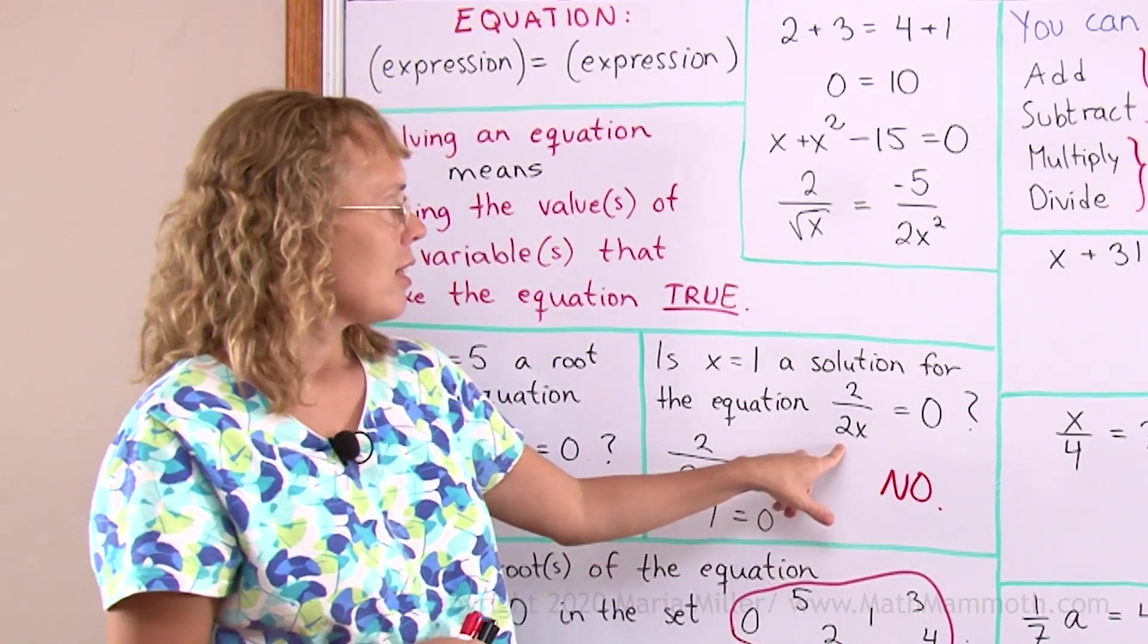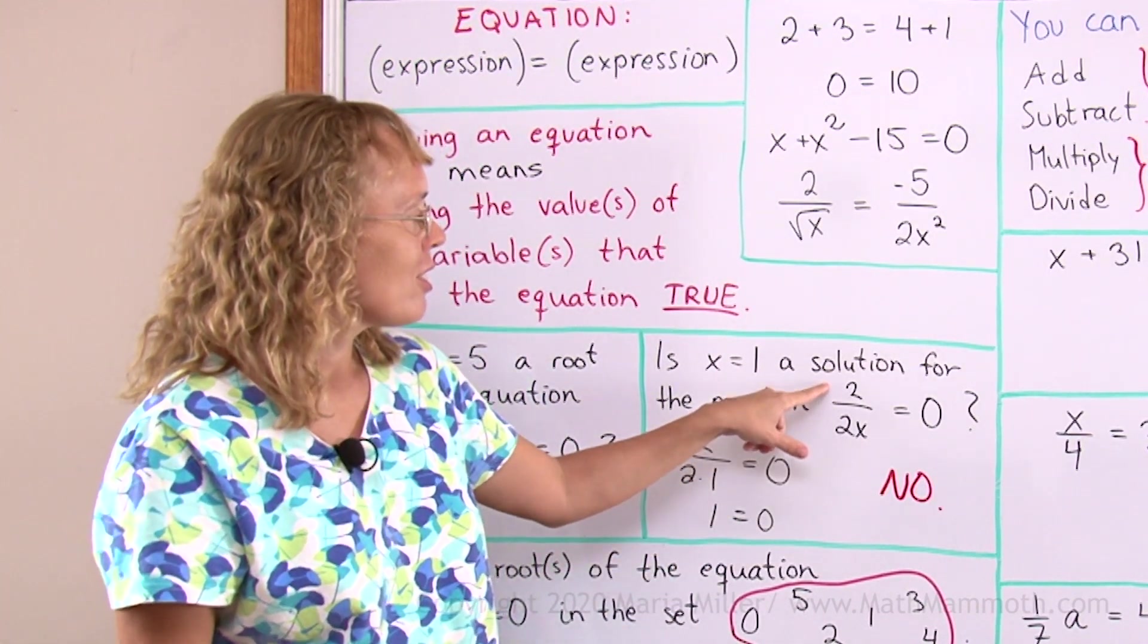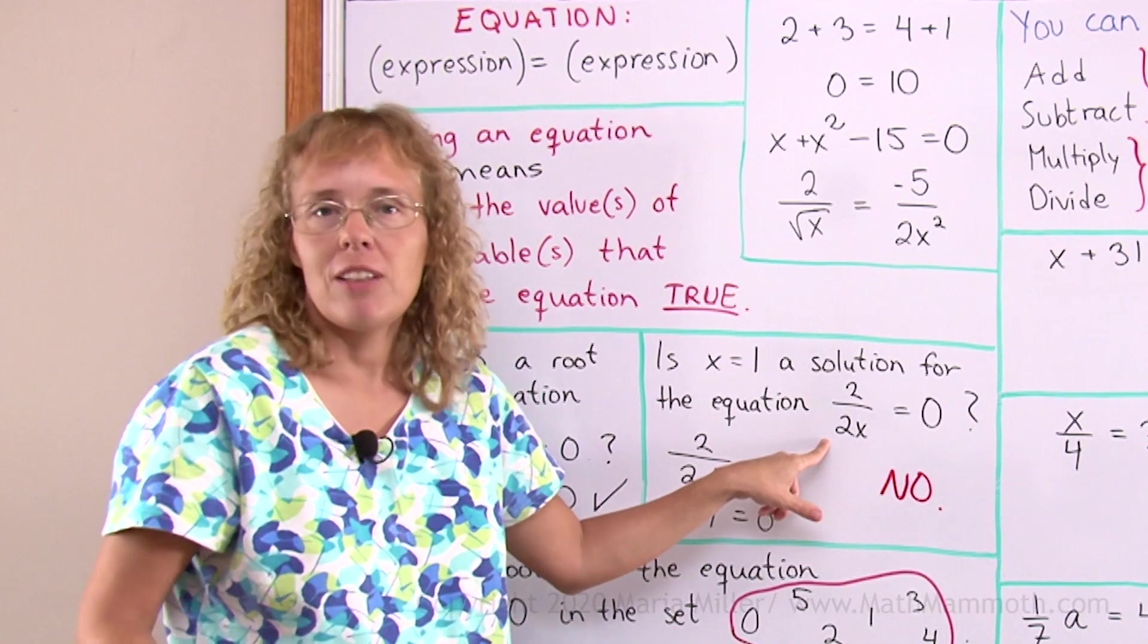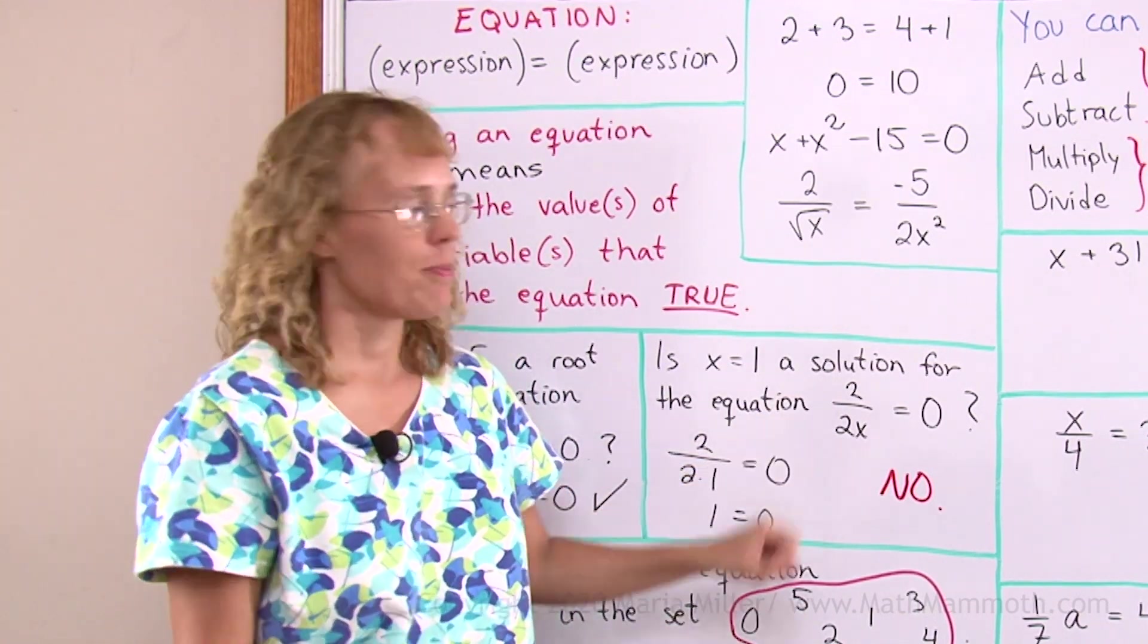It is not a solution. In fact, this equation has no solutions. Because no matter 2 divided by any number, you'll never get 0 from that kind of division. 2 divided by something, you're never gonna get 0.